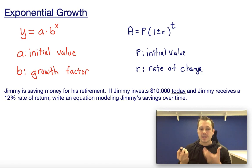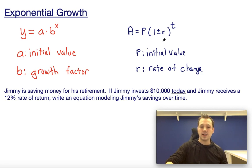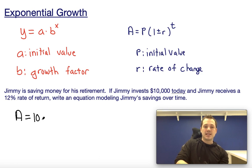For this equation, we know we would use the form on the right side here because it's a percent change. We know A is the amount Jimmy has at some point in the future. P would be $10,000. Now, r always needs to be written as a decimal, so if it's a 12% rate of return, we're going to have 1 plus 0.12, which is 1.12 raised to the t.